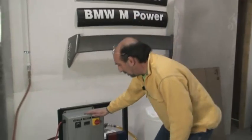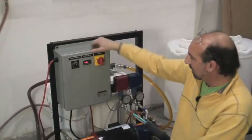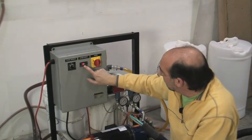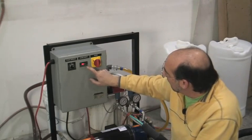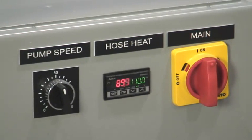So basically what we do is we turn on the main power. This is the hose heat control. We're going to set that to 110 degrees, and then we hit the set button. And now the hose heat will slowly come up to temperature.